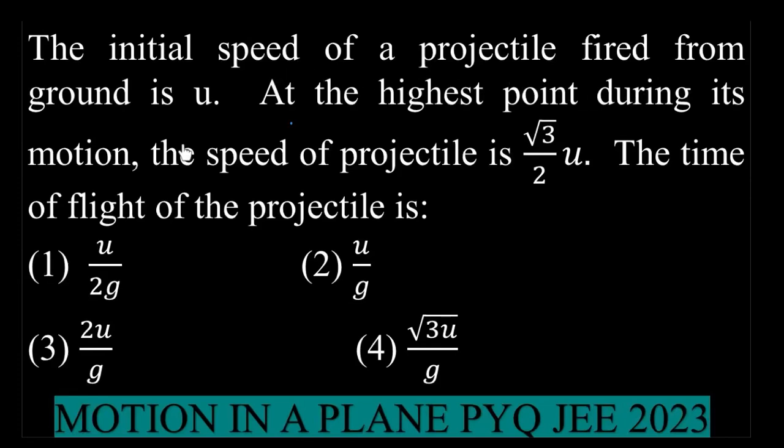The initial speed of a projectile fired from ground is U. At the highest point during its motion, the speed of projectile is √3/2 U. Again, the question is based on highest point, right? The time of flight of the projectile is: